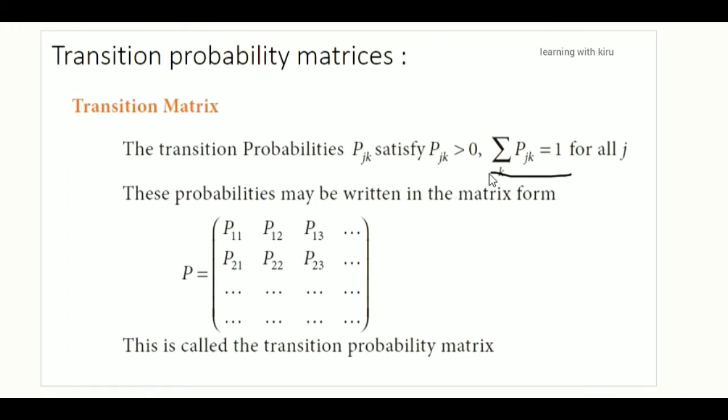This video is Chapter 1, last arc exercise. The last arc exercise is transition probability matrices. Transition probability matrices — transition means changes and probability means chances. Changes are changes because chances are different. That is the matrix formula.